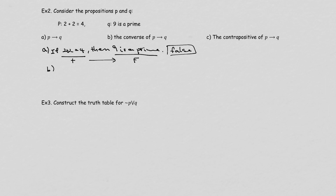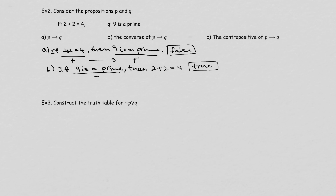What about B? It's the converse of P then Q, which means flip it: 'If 9 is a prime, then 2 plus 2 is 4.' The first statement — '9 is a prime' — is false. If the first statement is false, no matter what the second statement is, the conditional is still true. So the converse is true.